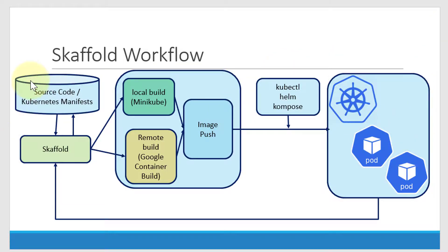The entire list of stages can be coupled together and made into a pipeline. We can have a production pipeline or a development pipeline. In the development pipeline, Skaffold will keep monitoring the source code for any changes. Based on the configuration, some changes require the image to be rebuilt, or we can just update the source file as part of the pod.